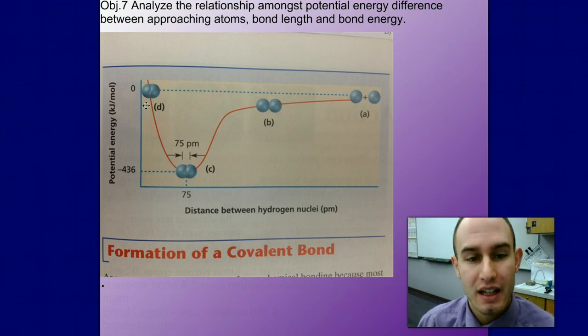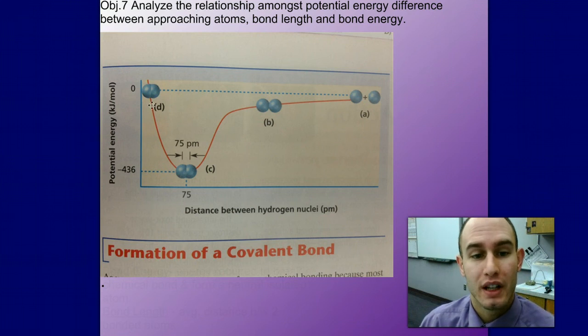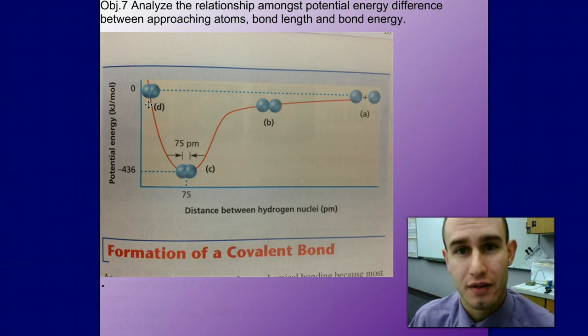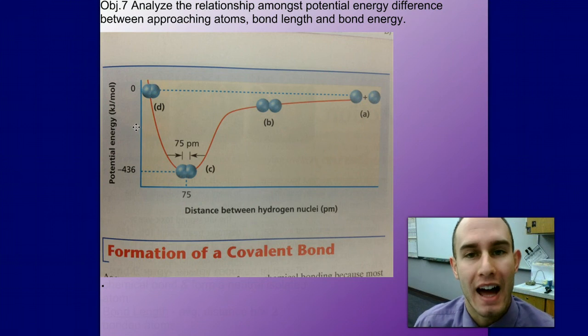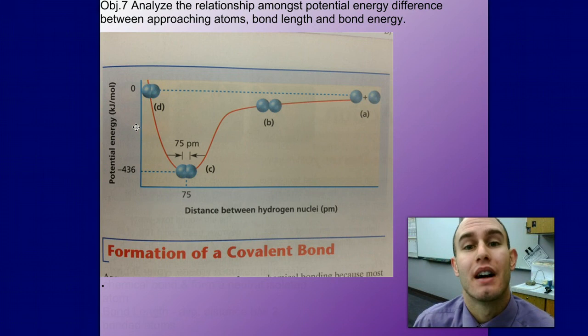At this point D, repulsion occurs between positive and positive charges and this is our bonded H2 molecule. So it is important to know why atoms form bonds. Decrease in potential energy means more stable compounds are formed.